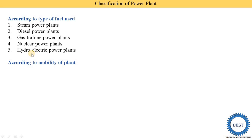Mobility of plant means whether the plant is movable or fixed. The first is the stationary power plant — stationary means the plant does not move from one place to another; it is fixed at one location. The second is the mobile power plant, which can be easily moved from one place to another. These types of power plants are generally installed on a truck or trolley.